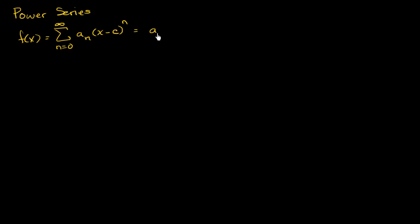So if I were to expand this out, I have my first term's coefficient a sub 0 times x minus c to the 0th power, plus a sub 1 times x minus c to the first power. This one will simplify to just a sub 0, this would simplify to a sub 1 times x minus c, plus a sub 2 times x minus c squared. And I could just keep going on and on and on.